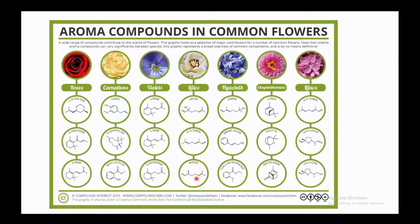Myrcene's structure contains three double bonds, out of which two are in conjugation. The next type of flower contains ocimene as a major component. The second component is cinnamyl alcohol, having a benzene ring, an alkene double bond, and an alcohol functional group — three different functional groups in one molecule: aromatic, alkene, and alcohol. The third compound is ethyl-2-methoxybenzoate, which contains an ester functional group, an ether functional group, and an aromatic part.